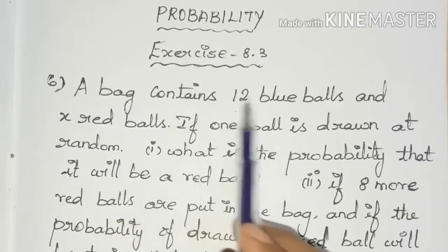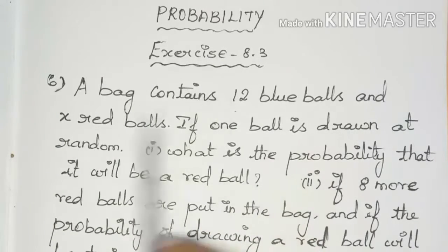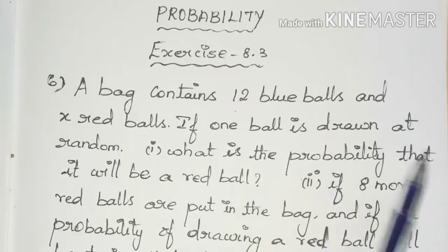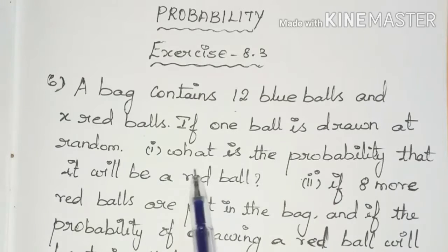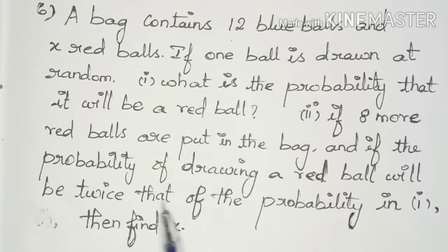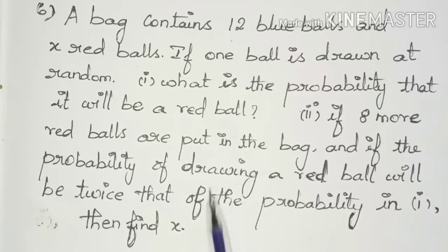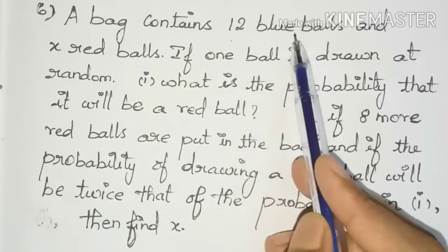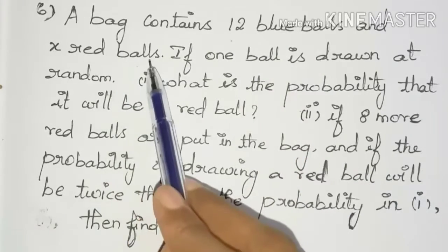The question: a bag contains 12 blue balls and x red balls. If one ball is drawn at random, what is the probability that it will be a red ball? If eight more red balls are put in the bag and the probability of drawing a red ball will be twice that of the probability in part one, find x.